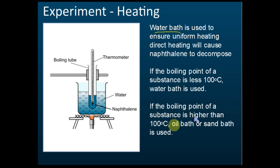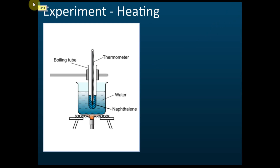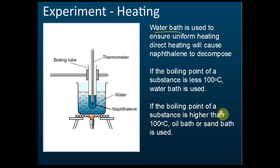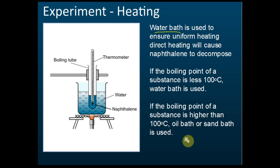If the boiling point is less than 100°C, we use a water bath. But if the boiling point is higher than 100°C, we cannot use a water bath because the boiling point of water is 100°C — that is the maximum temperature water can reach. If the boiling point of the substance is higher than 100°C, we use an oil bath or a sand bath, because for oil and sand the temperature can go to a few hundred degrees Celsius.